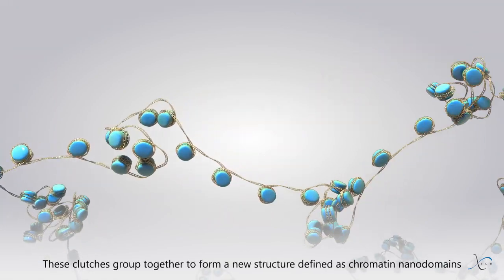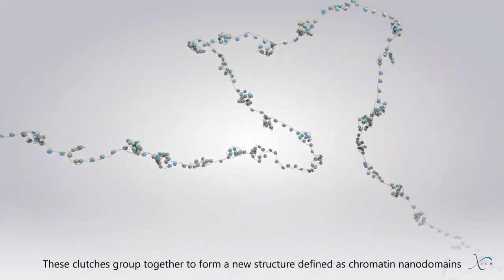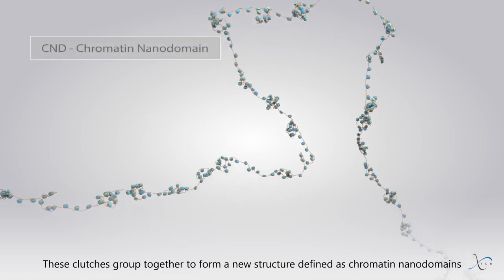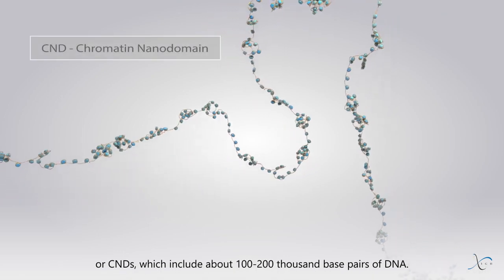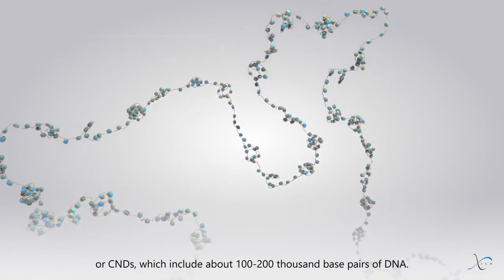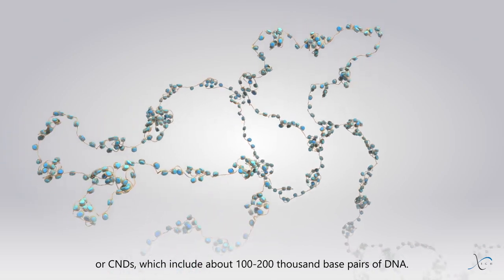These clutches group together to form a new structure defined as chromatin nanodomains, or CNDs, which include about 100,000 to 200,000 base pairs of DNA.